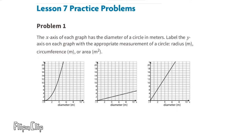Show me some love — like, comment, share, and subscribe. Open up Resources: Illustrative Mathematics Unit 3, Lesson 7: Exploring the Area of a Circle. Problem number one: the x-axis of each graph has the diameter of a circle in meters. Label the y-axis on each graph with the appropriate measurement — radius in meters, circumference in meters, or area in meters squared.